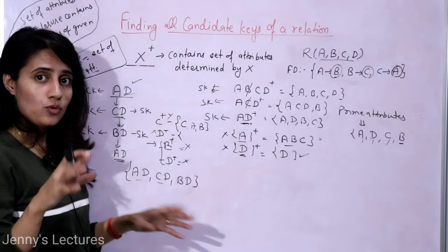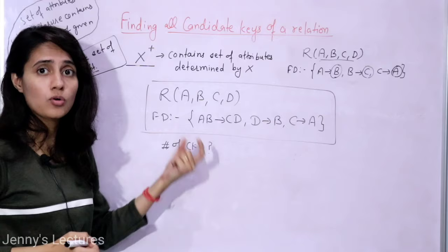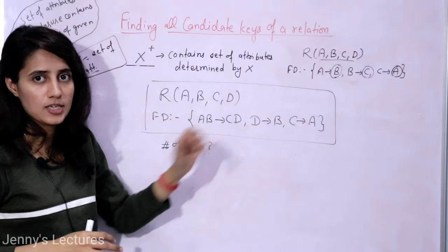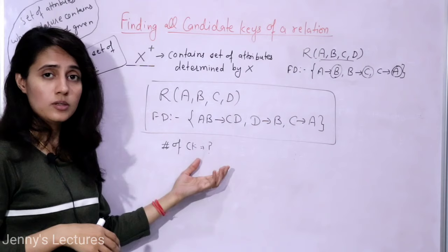Here is a practice question for you: a relation with given functional dependencies is provided. You need to find out the number of candidate keys, what those candidate keys are, and what the prime attributes are. You can tell me in the comment box, and I'll also make a video solving this question. See you in the next video — bye bye, take care.